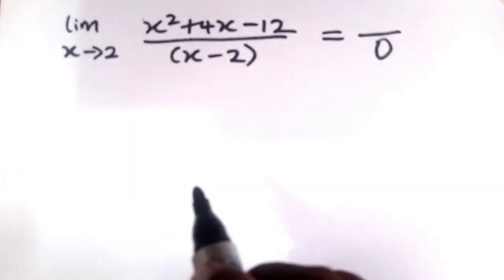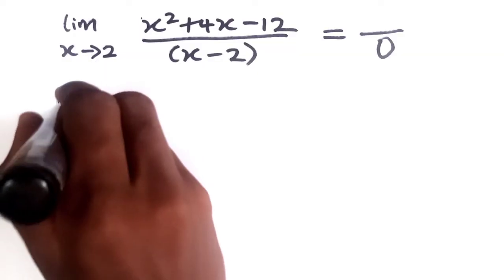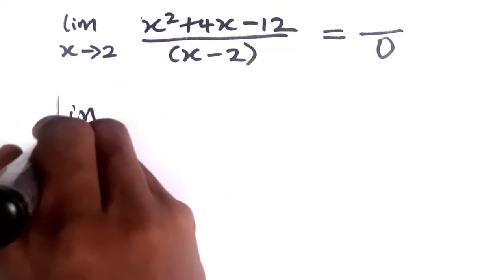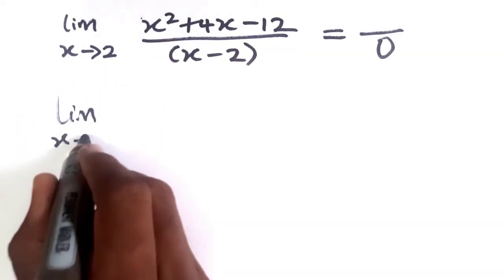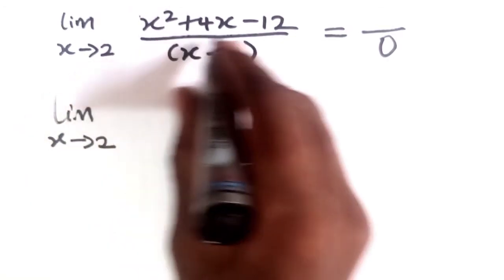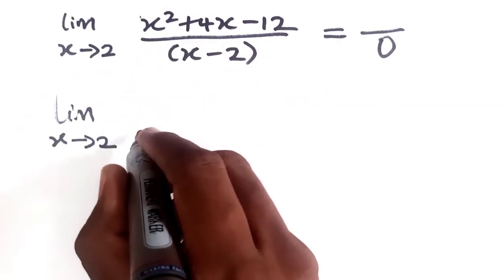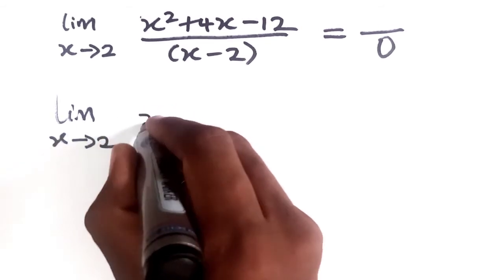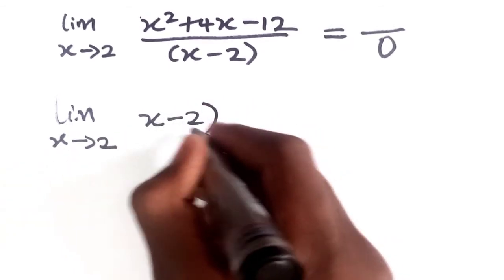So write: limit as x tends to 2. When we factorize x squared plus 4x minus 12, it's going to give us (x minus 2) in brackets and (x plus 6) in brackets, over x minus 2.